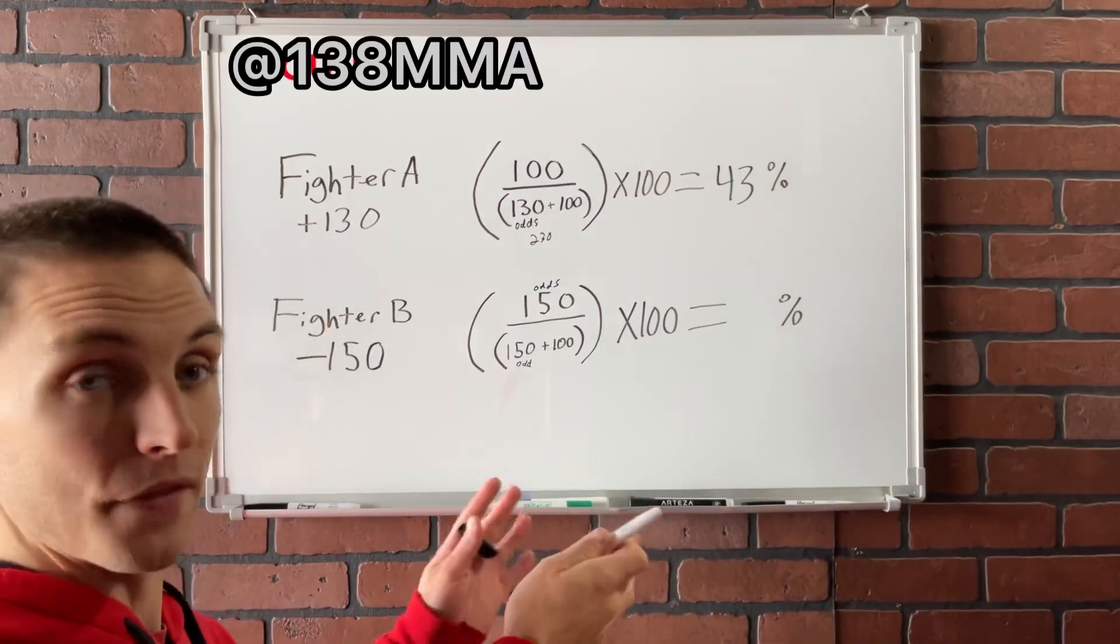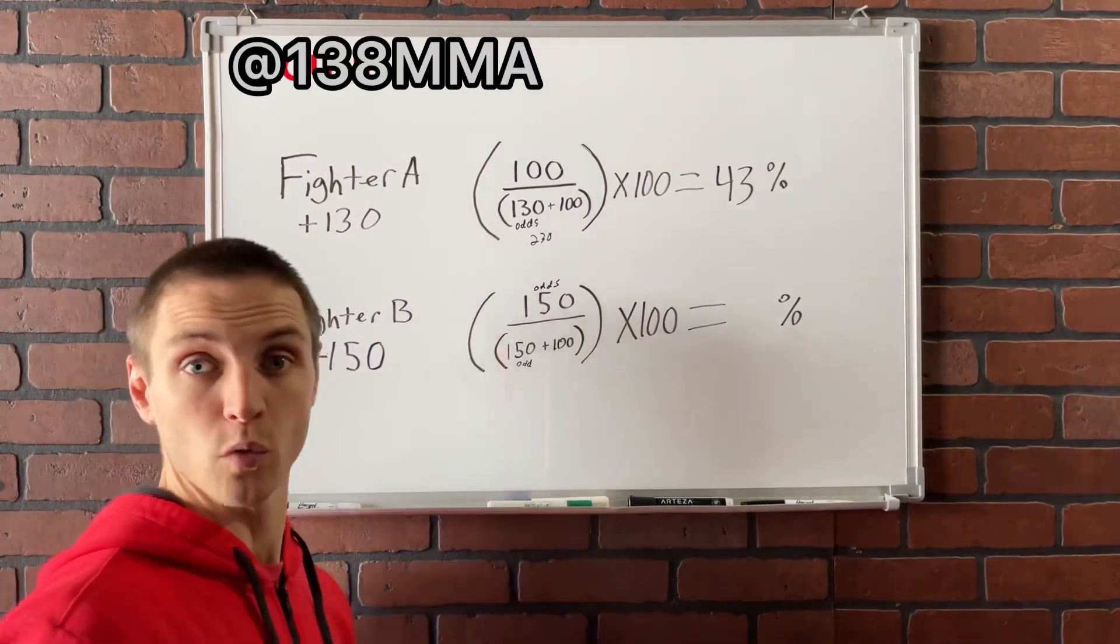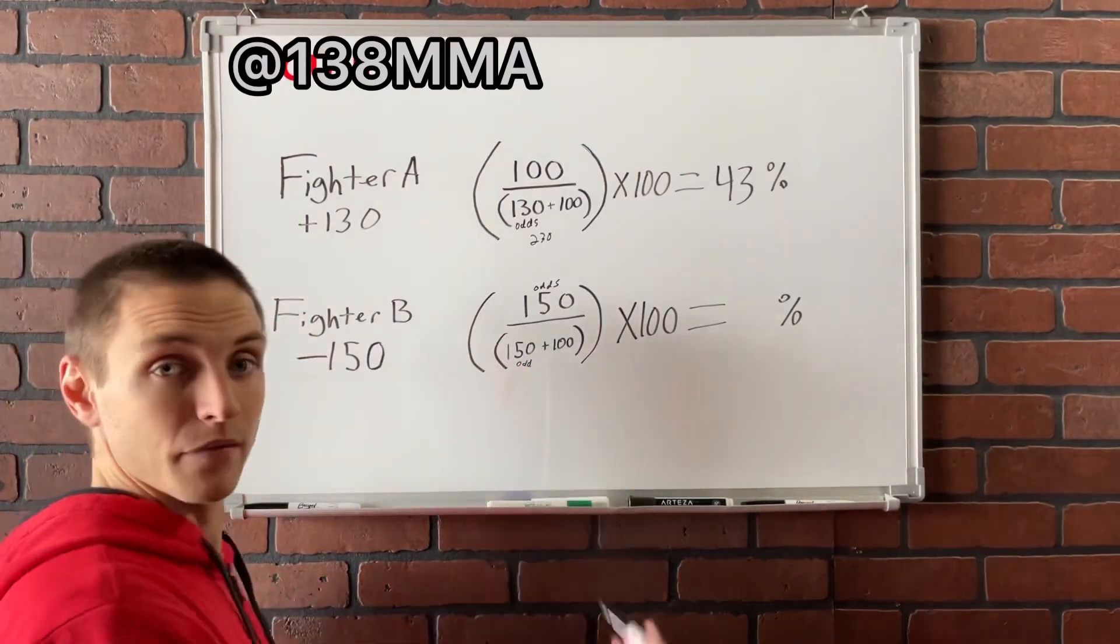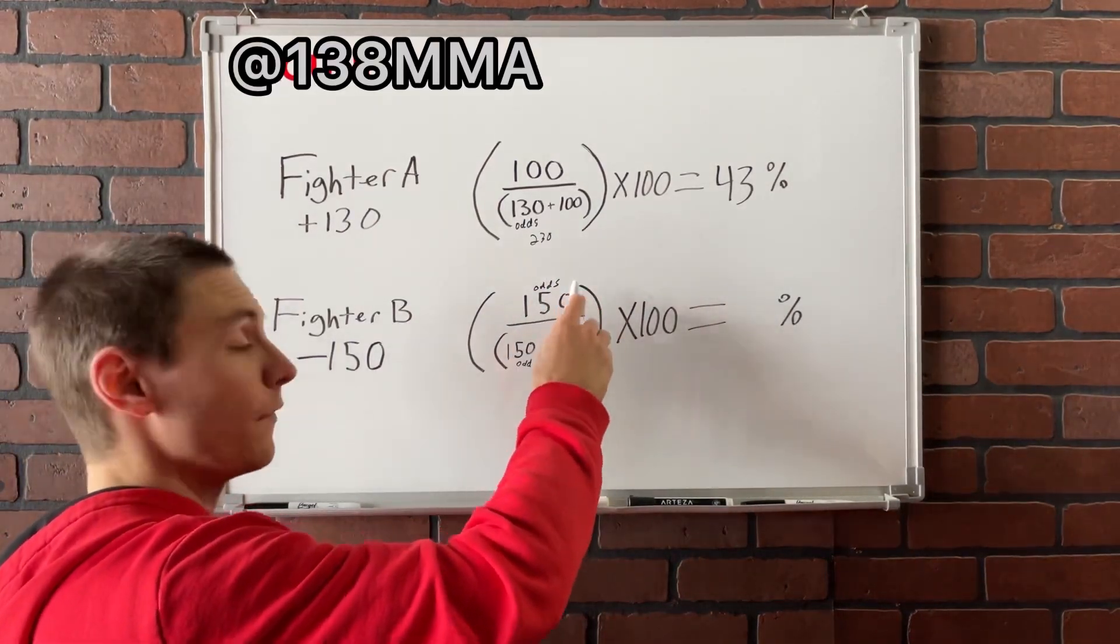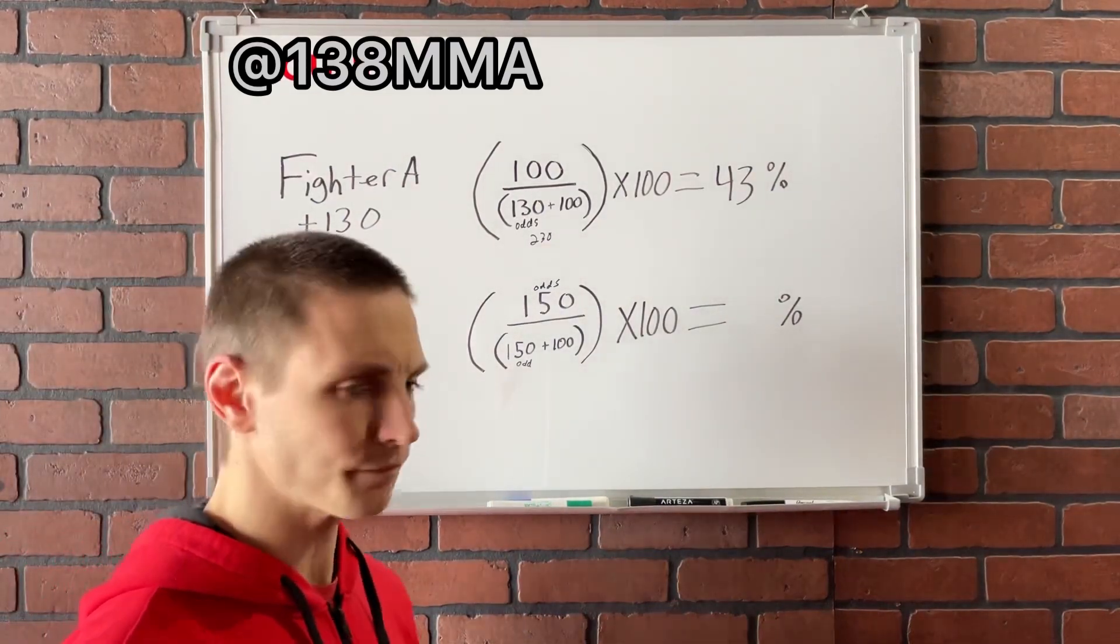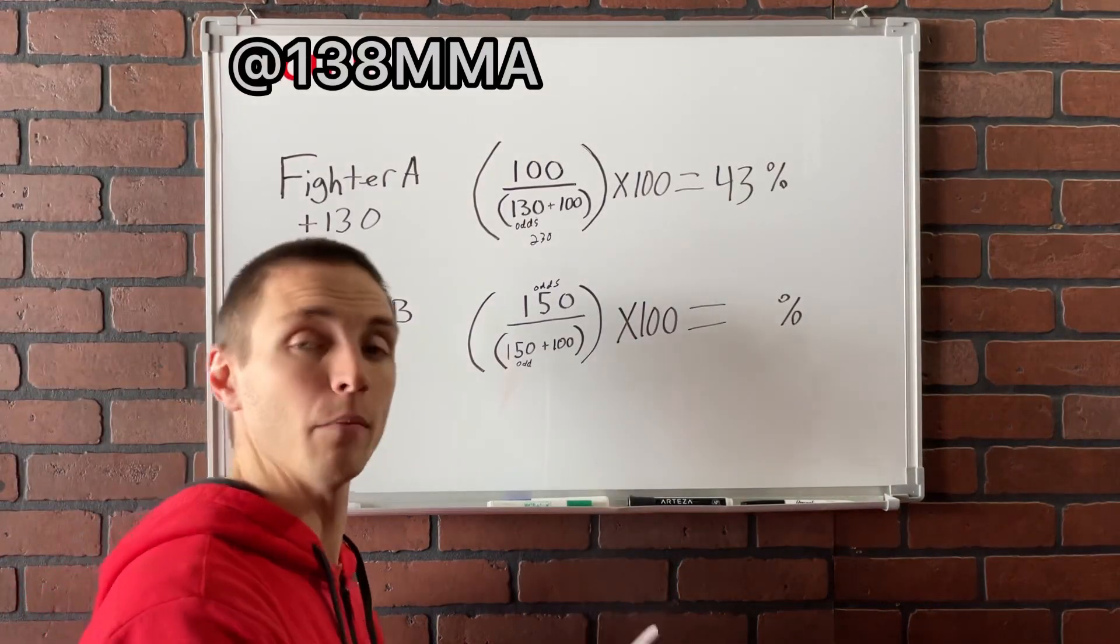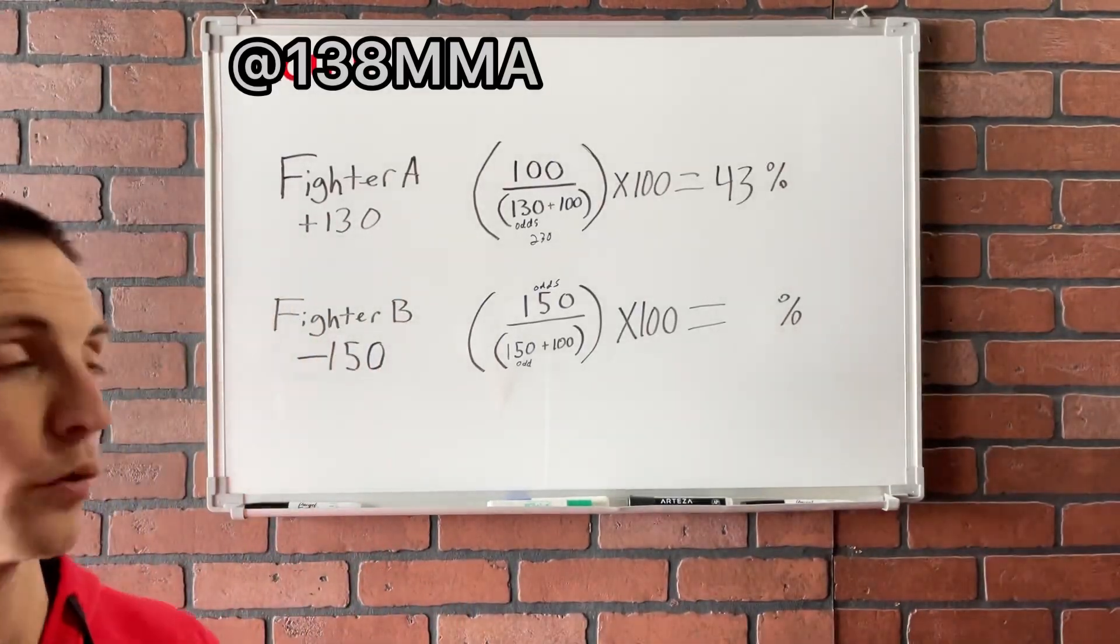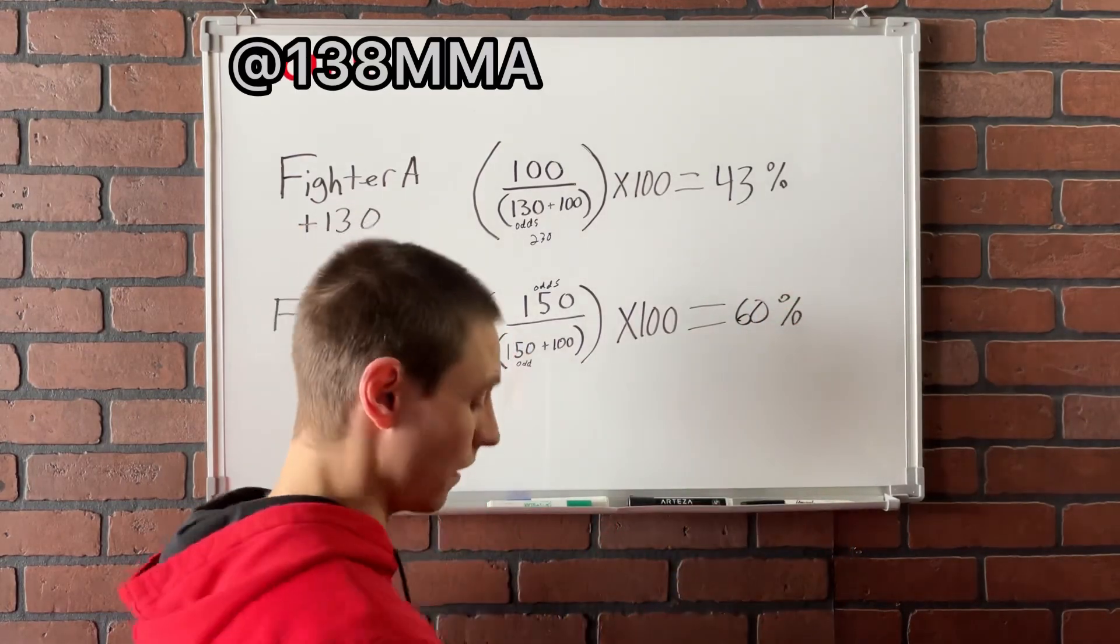So what we're going to do is we're going to take the 150 and add that to 100. So that gives us obviously 250. We know that. Then we're going to take this 150 here and divide that by the 250. That should give you 0.6, if my memory serves and my math is right. Then you're going to take that and you're going to multiply that by 100 to get you the percentage because 0.6 is a decimal. So you multiply that and get you your percentage, which is 60% of the time.